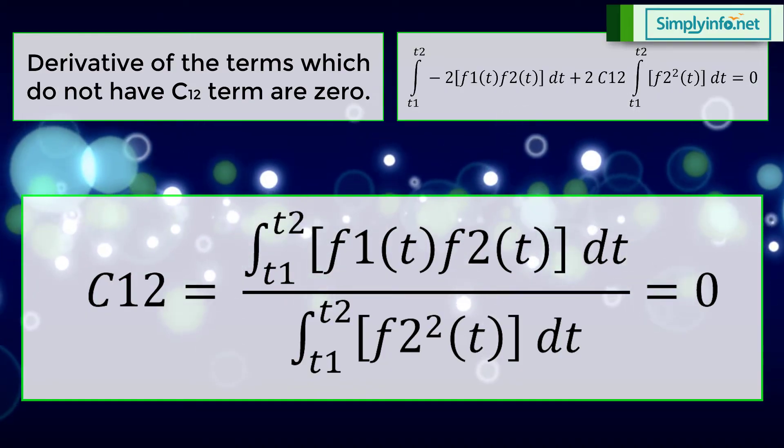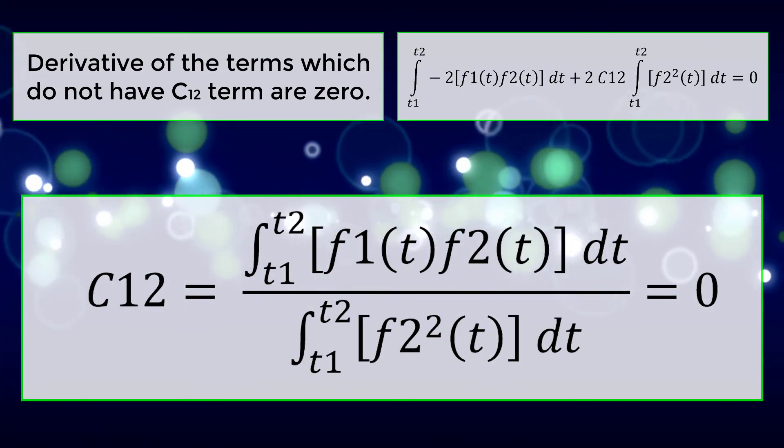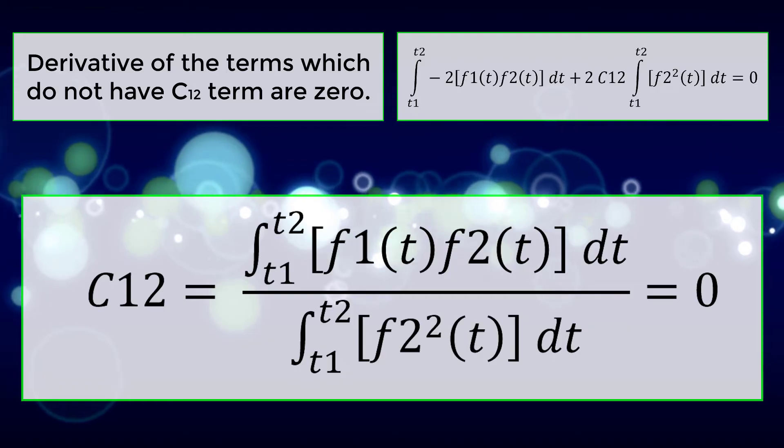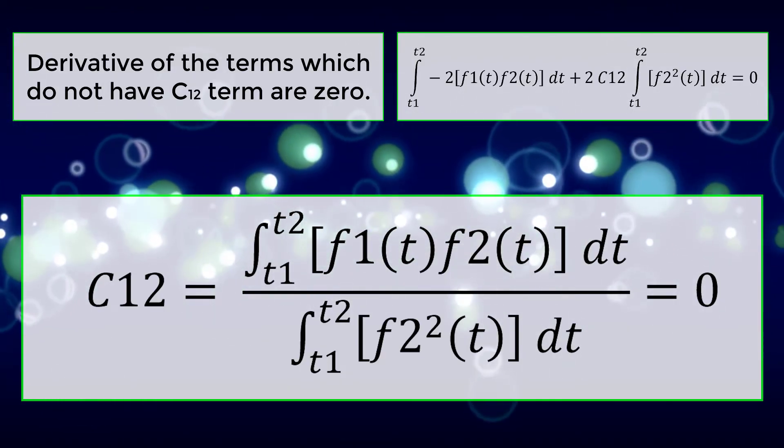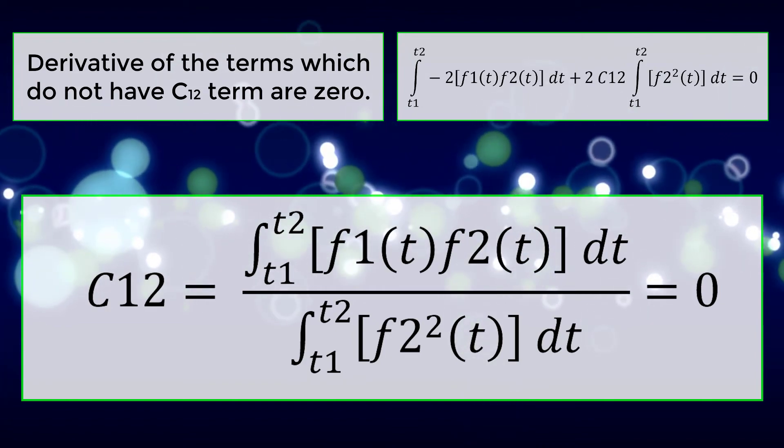C12 equals integral t1 to t2 of f1(t)f2(t) dt divided by integral t1 to t2 of f2^2(t) dt.